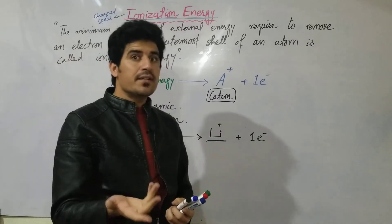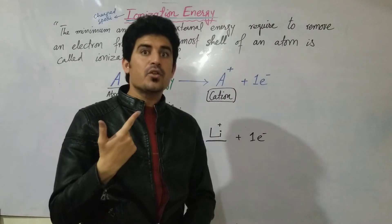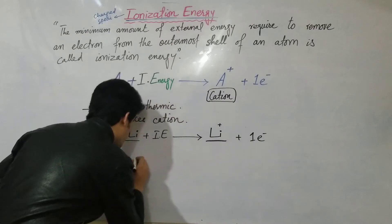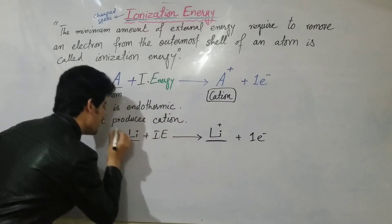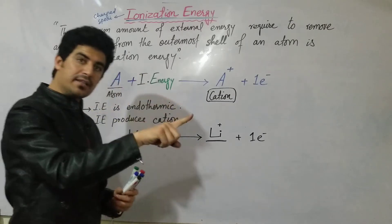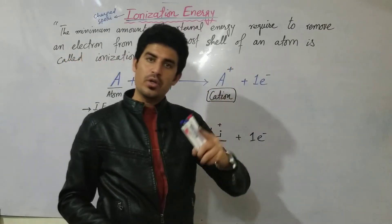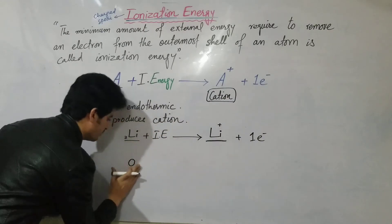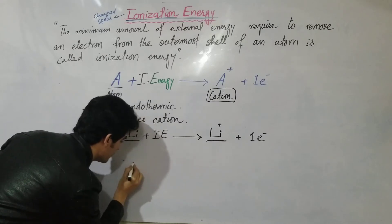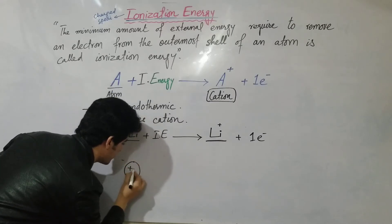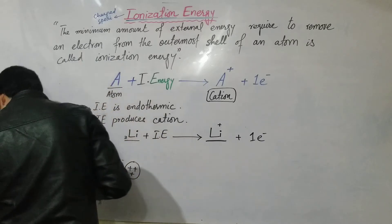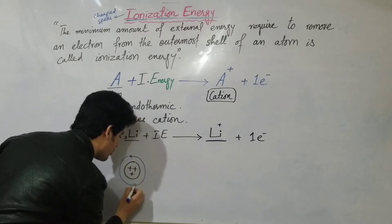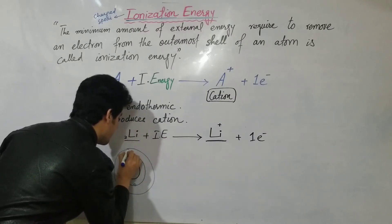Now why does ionization energy always form a cation and not an anion? Let's look at lithium's atomic structure. The atomic number of lithium is 3, meaning number of protons = 3 and number of electrons = 3. In the first shell there are 2 electrons, and in the second shell there is 1 electron.